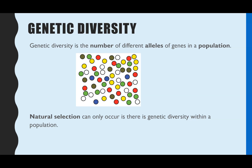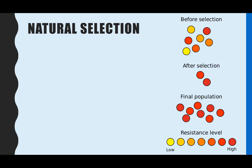Genetic diversity is the number of different alleles of genes in a population. We've got a representation here showing lots of different colours representing the number of different alleles for a particular gene in that population. Natural selection can only occur if there is genetic diversity, so if you do have a range of different alleles.